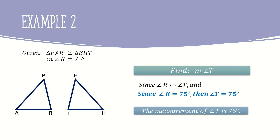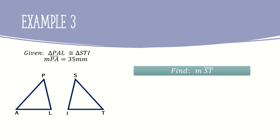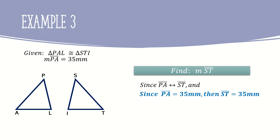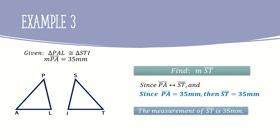In example 3, triangle PAL is congruent to triangle STI, and line segment PA is equal to 35 millimeters. Find the measure of line segment ST. Since line segment PA corresponds to line segment ST, and line segment PA is equal to 35 millimeters, then line segment ST is also equal to 35 millimeters.